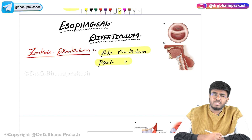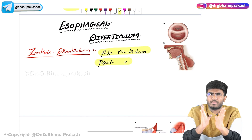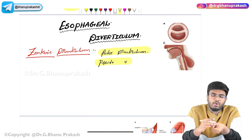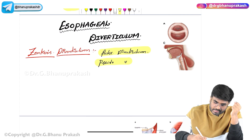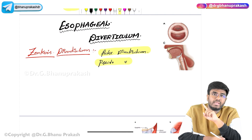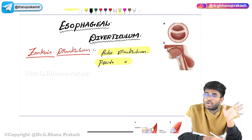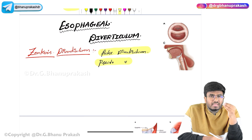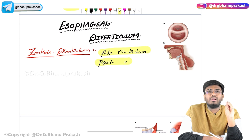Why is it called a false diverticulum? The entire GIT is normally made up of four layers: mucosa, submucosa, muscularis, and serosa. But in this diverticulum, not all four layers are present — only either the mucosa or the submucosa is present. Because all the layers are not present, we call it a pseudo diverticulum.